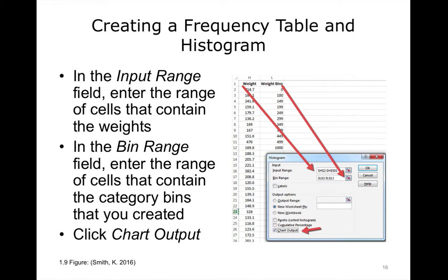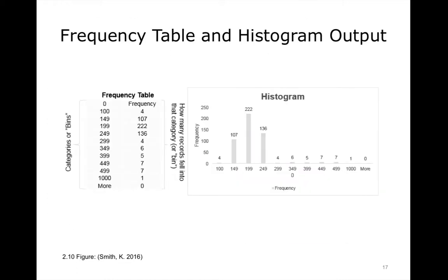To run frequencies in Microsoft Excel, click the Data tab, then click Data Analysis, and then choose Histogram. In the Input Range, enter the range of cells that contain the weights — in this case, H2 through H501. In the Bin Range field, enter the cells that contain the category bins you created; in this example, L2 through L12. Finally, determine what type of output you want — let's click Chart Output for this example. Excel will produce a new worksheet in your file with a table and the histogram.